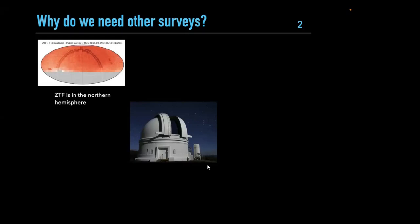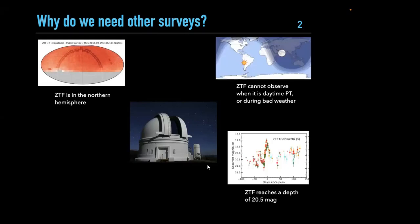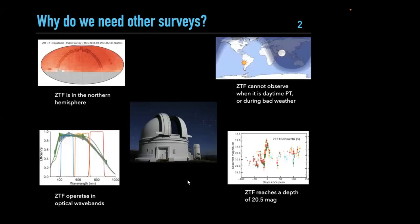The first reason is that ZTF is in California, in the northern hemisphere. Nominally you don't get any coverage below minus 30 degrees declination. So if your favorite kind of transient is in the southern hemisphere, ZTF is not going to see it — you need telescopes in the south.